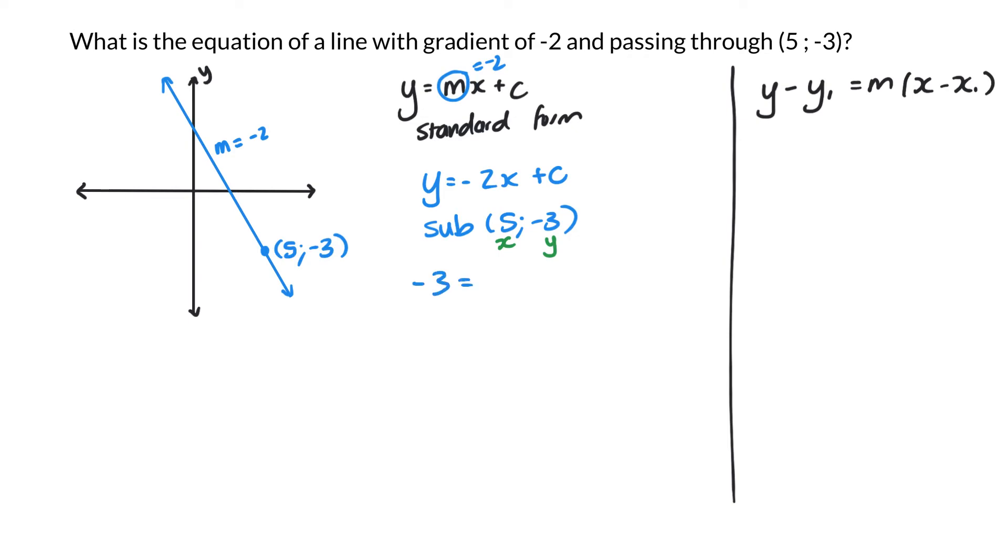So negative 3 equals negative 2 times 5 plus c. And then I can simplify this equation. And I get that c is going to be 7. So my equation of my graph is y equals negative 2x plus 7.